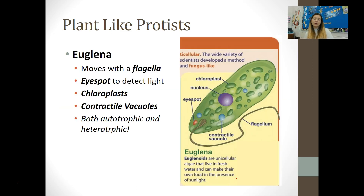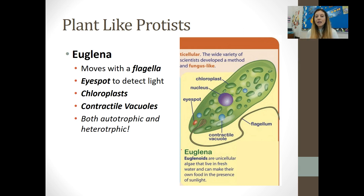Euglena is the plant-like protist you are expected to be familiar with — pause on this slide and draw the picture. Euglena move with a flagella, that whip-like tail. They have a red eye spot that allows them to detect light, which is important because they are photosynthesizers. They are full of chloroplasts, where photosynthesis actually happens, and they also have those contractile vacuoles. Euglena are unique because they photosynthesize but can also consume other organisms like a heterotrophic animal-like protist.